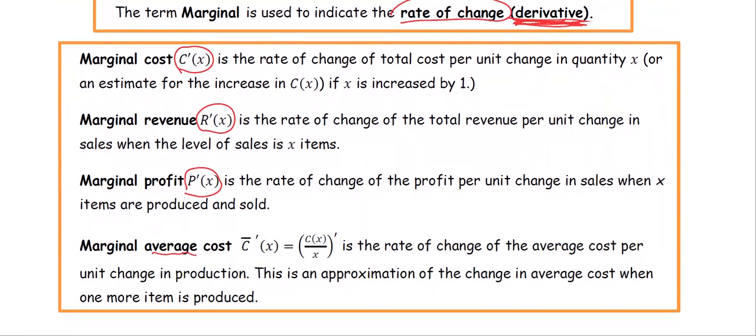For the average cost function, we use the notation C bar, and the marginal average cost is C bar prime. As you see the notation here, C bar prime. How do you compute C bar? Average means...